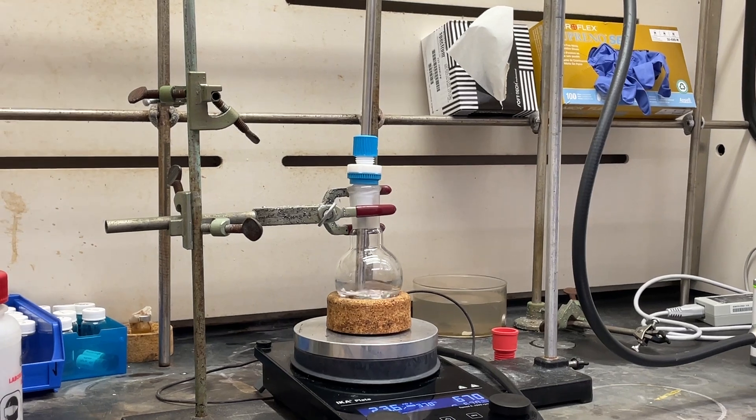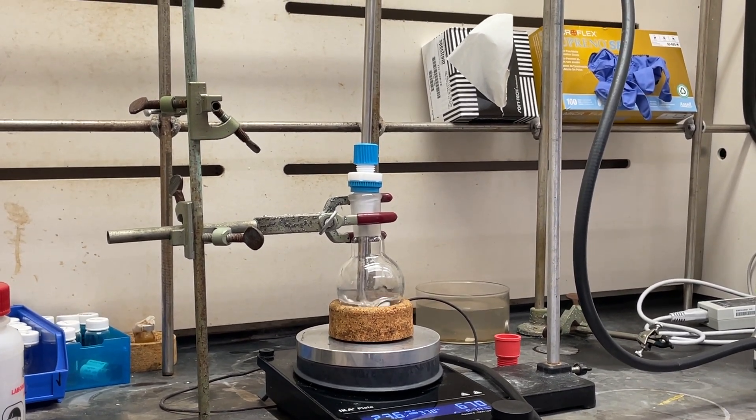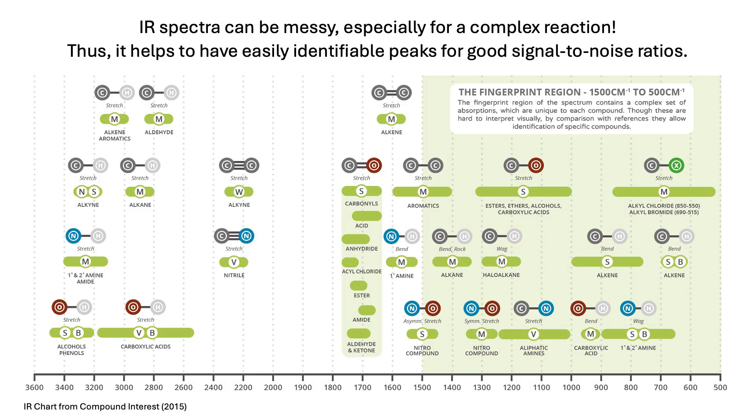However, as with other analytical techniques, there are also limitations that you should keep in mind when considering the use of React-IR. For one, overlapping peaks in the IR spectrum can make it challenging to distinguish compounds in complex mixtures. That being said, you also need identifiable functional groups in your molecules for this technique to work.